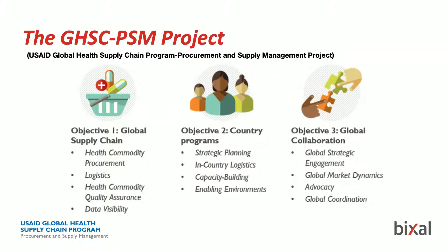The project is really broken into three pieces. The first is the global supply chain — we work with manufacturers to purchase things like malaria bed nets, antiretroviral treatments for HIV and AIDS, contraceptives, Zika prevention, and so on. We manage the logistics processes, global shipping, and customs getting commodities into the developing countries that need them. The other — and probably most interesting — part is our country programs, also called systems strengthening. We work out of 33 different country offices with domestic governments to shore up their domestic supply chains.